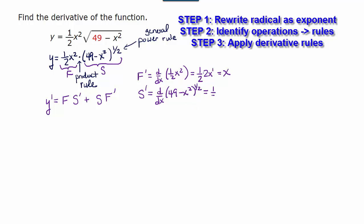So I'm going to write down 1 half. I'm going to leave the 49 minus x squared the same inside the parentheses. Subtract 1 from 1 half. So negative 1 half. And we need to multiply times the derivative of the 49 minus x squared. What is the derivative of 49 minus x squared? Well the derivative of 49 is just 0. The derivative of negative x squared is negative 2x to the first.